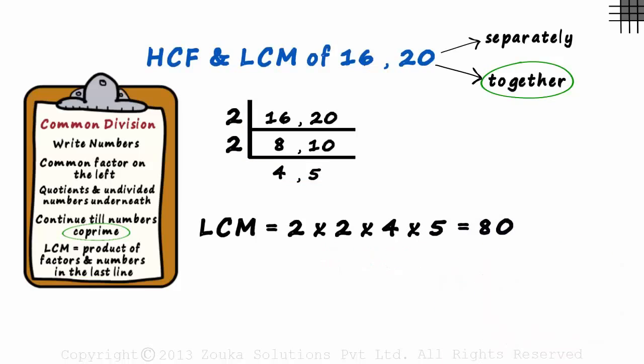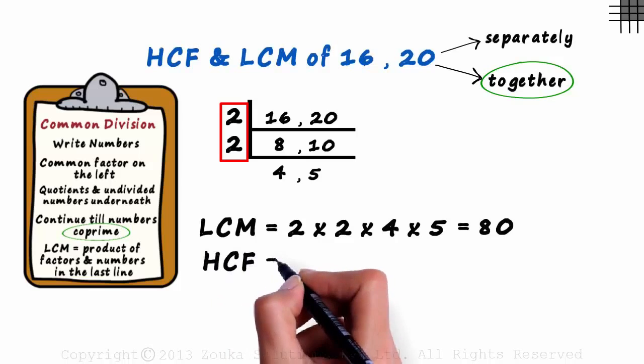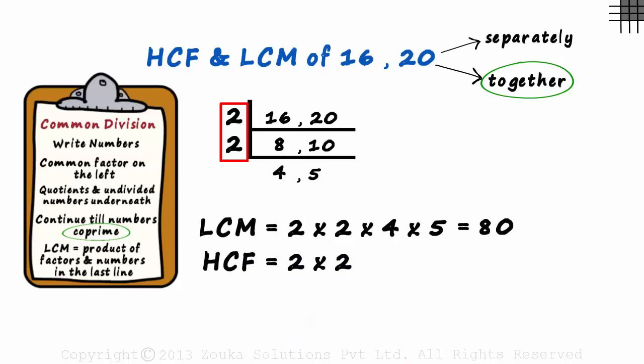Yes, but how does this give us the HCF? Well, the product of the factors on the left gives us the HCF. Hence, the HCF will equal two times two, which is four. This is the HCF of sixteen and twenty.